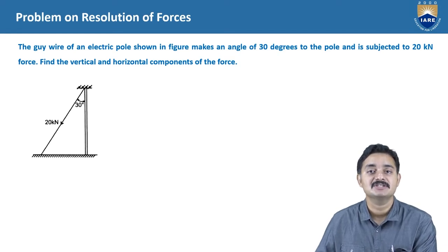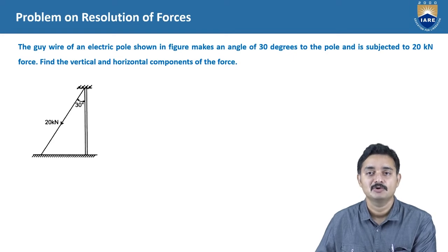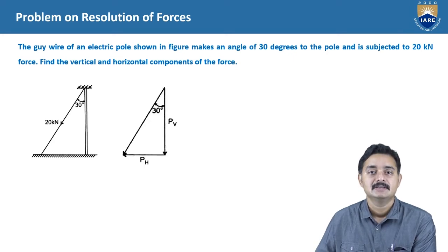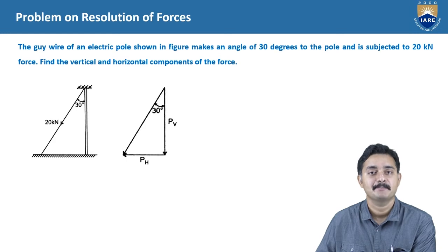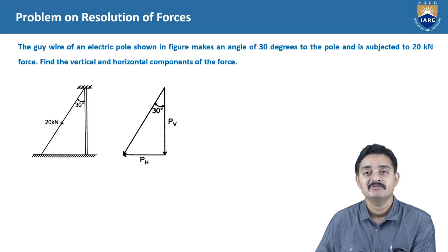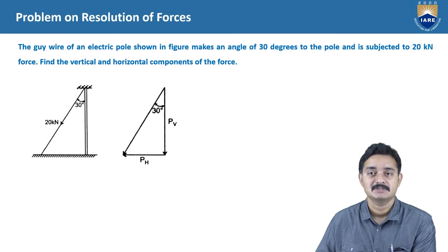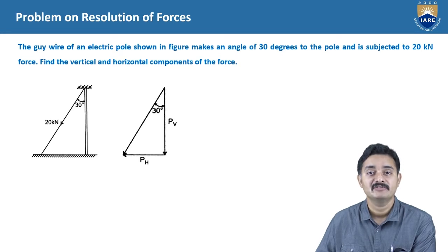First, let us represent the horizontal and vertical components of P = 20 kN force. The direction of the component forces should be such that they are to be reached to the final arrow of the main force. That is, the vertical component will be moving towards the arrow of the main force in the vertical direction up to the main force, and the horizontal component also will be moving towards the arrow of the main force up to the main force.